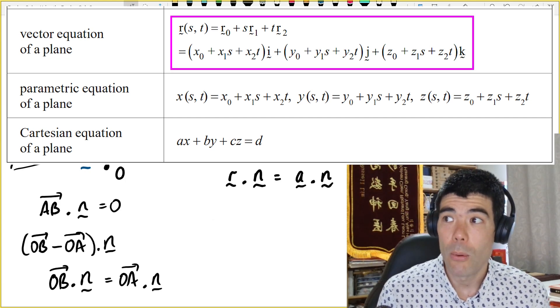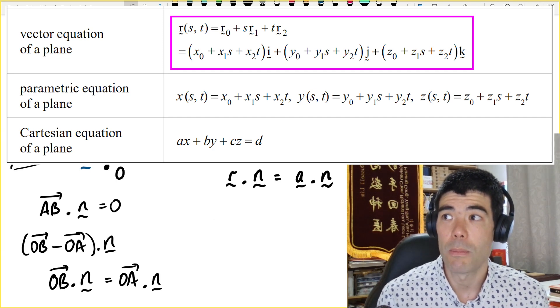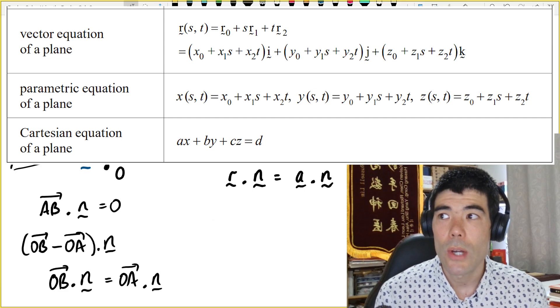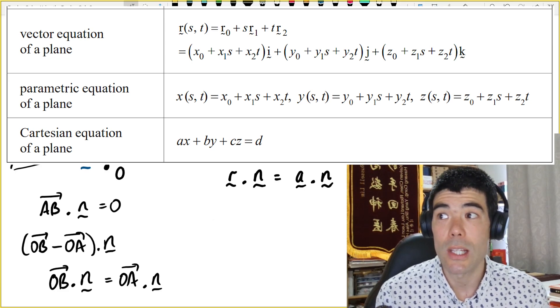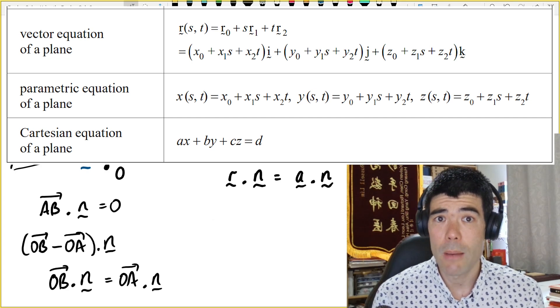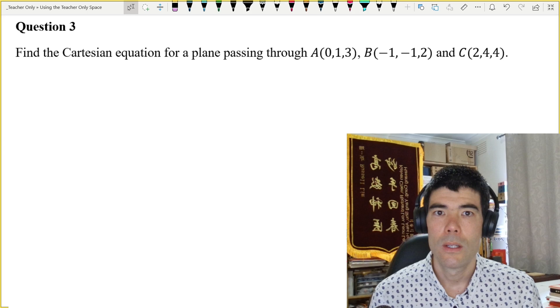Now, we also have another form, another vector form of the equation for a plane on the VCE Specialist Mathematics Formula Sheet, and it's this one here. So, in that case, we have the position of a point in the plane, and then two non-parallel vectors in the plane. And that form, think about that form again, it's really not unique. So, you could have a bunch of different equations that actually give the same plane, and you would have to check a little bit like we did with the previous example with the line, are those two equations actually giving the same plane?